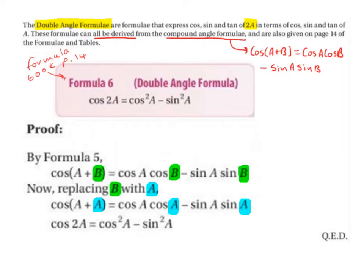Bring down the minus. And sin A, sin A is really sin A multiplied by sin A, and that gives us sin²A, which is the double angle formula. So cos 2A equals cos²A minus sin²A. Q.E.D.